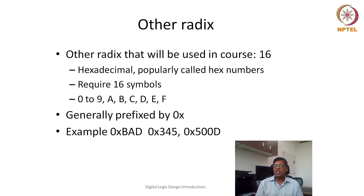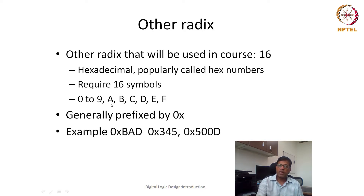The 6 symbols borrowed from the alphabets are A, B, C, D, E, F. These are the 6 symbols borrowed from our alphabet. So whenever A is written, A represents 10. B represents 11, C represents 12, D represents 13, E represents 14, and F represents 15.